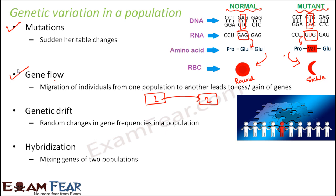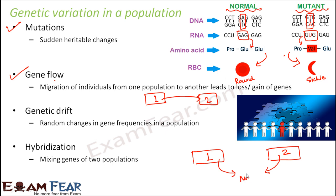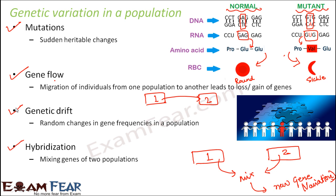The fourth factor is hybridization. Hybrid always refers to a mixture of two things, so hybridization is the mixing of genes from two populations. If you take genes from population 1 and genes from population 2 and combine them, the resulting genes are new — they represent new variations. You took some genes from one population and some from another, mixed them together, and the new form is a new gene representing a new variation that can then be inherited by the next generation. These are the four factors that impact genetic variation in a population.